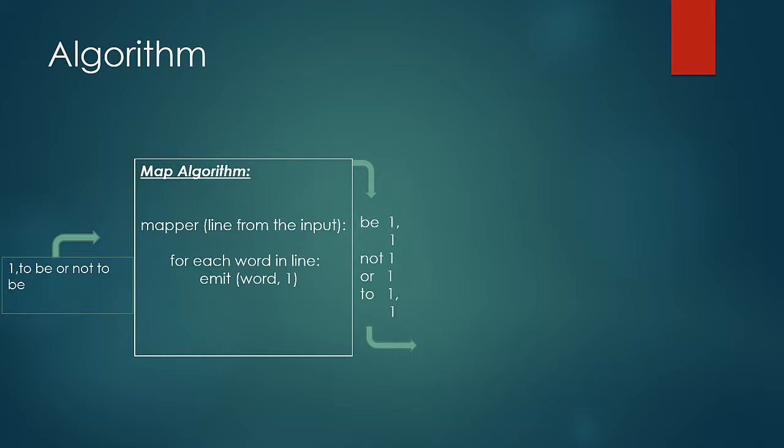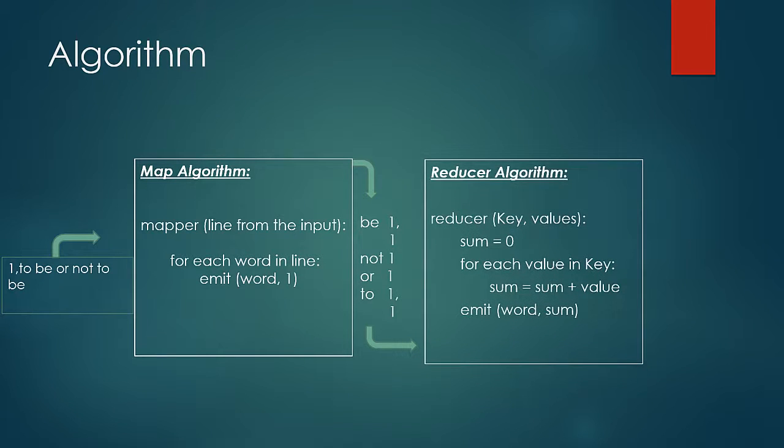So now the reducer would call the reduce method once per key, and in the method it would iterate over the values of each key and sum it up to produce the result.